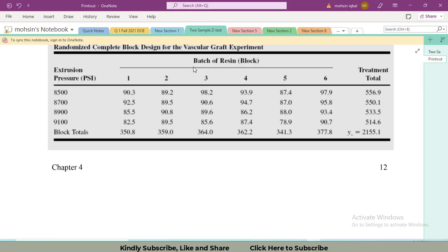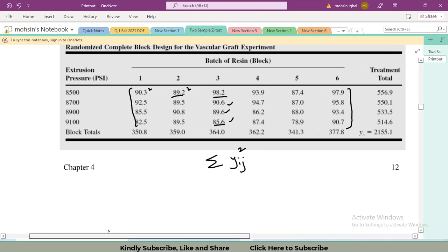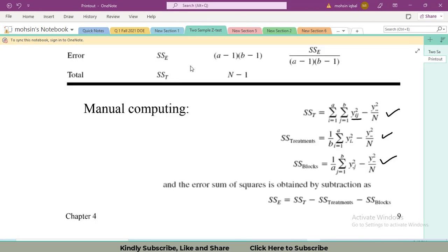You can see that this 89.2 is yij, this 98.2 is also yij, 85.6. All of these individual values are yij. What we will have to do in the formula is take the square of yij. I will take the square of all those values. Then after taking the square, I will take the summation of these values as per the formula. Let's go towards the formula again. n is the number of total observations. Here we have 4 rows and 6 columns, so we have total equal to 24 observations.